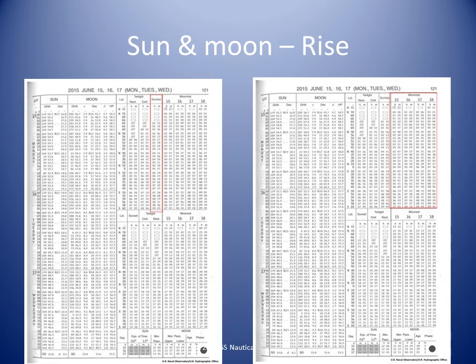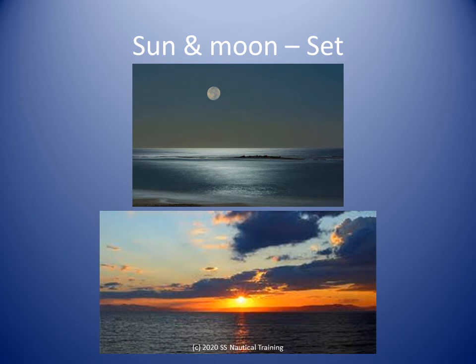The Nautical Almanac provides the different moonrise times for different latitudes for each of four days; the moonrise column is highlighted in red on the right panel. Moonrise and set will affect tides and tidal currents. Sun bearings at sunset can similarly be compared with calculated amplitude and used to find compass error.